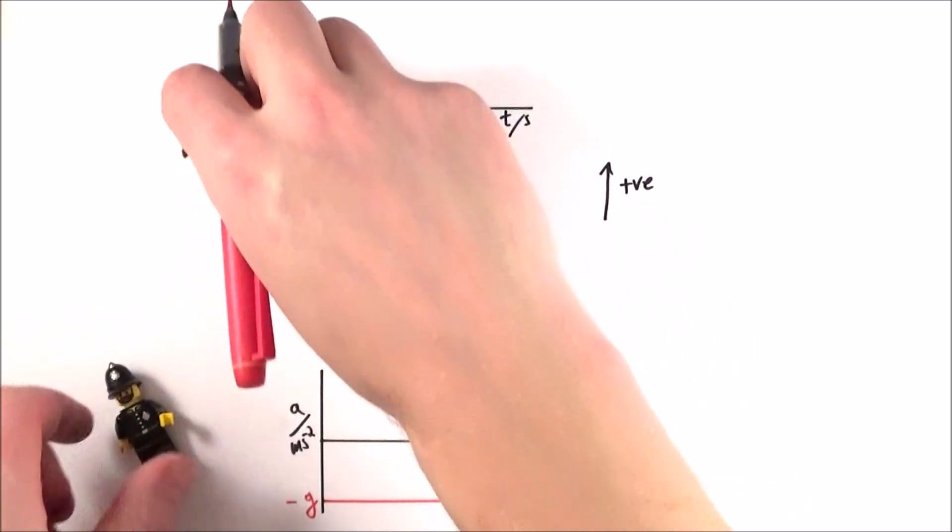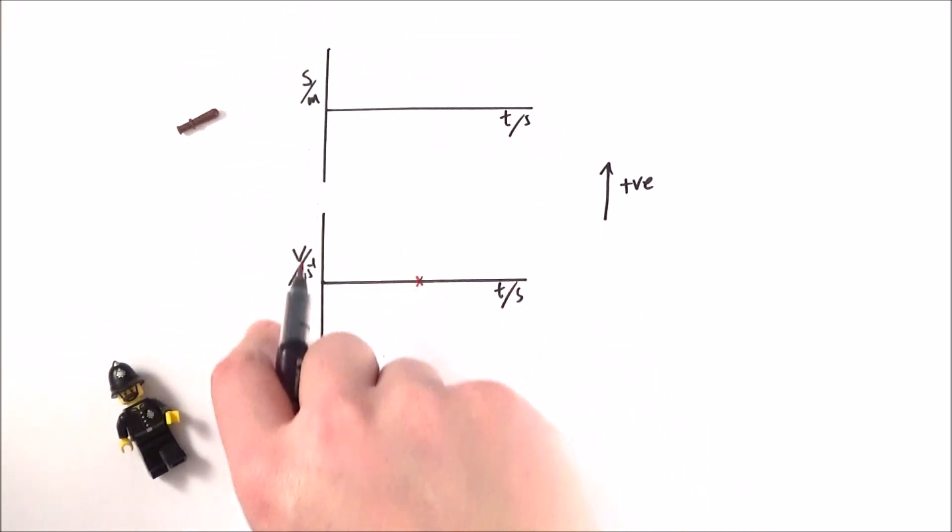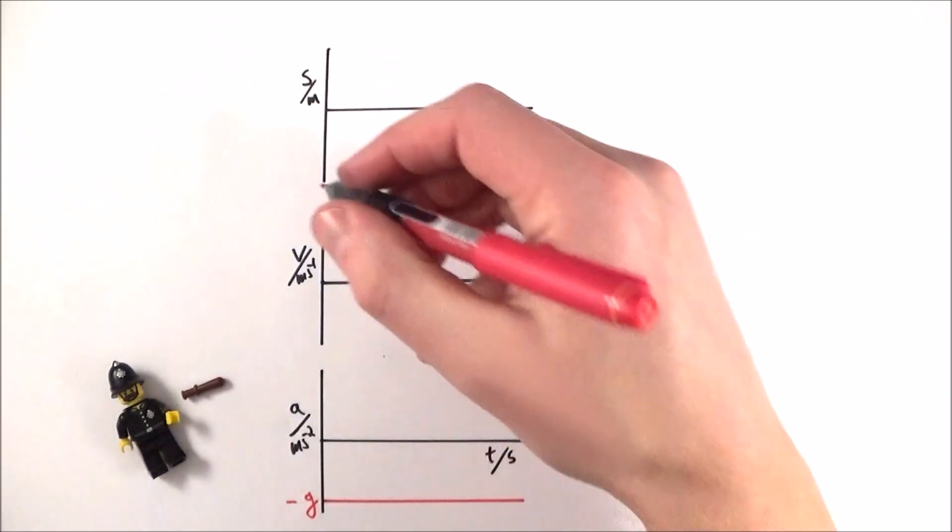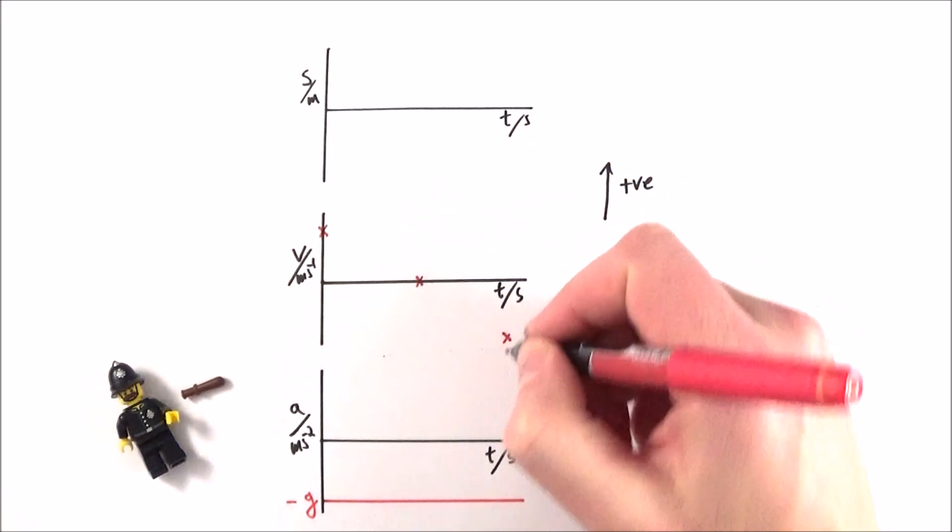At the very top, that truncheon is going to at some point go from having a positive value to a negative value. It's got the highest positive velocity at the very start. And at the very end, it has a negative value for velocity.